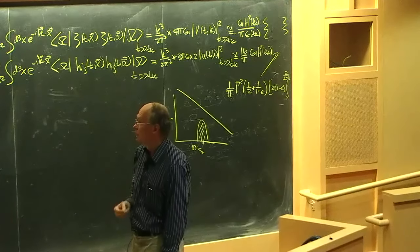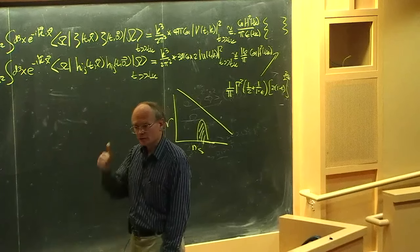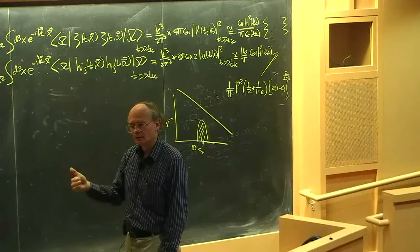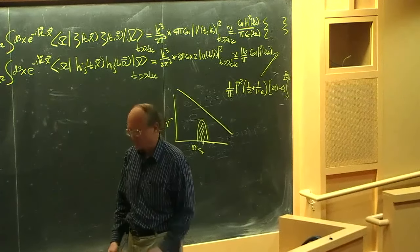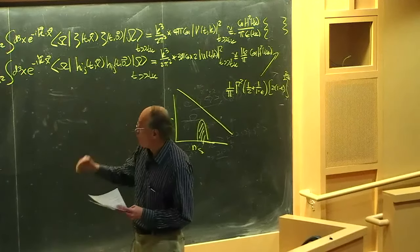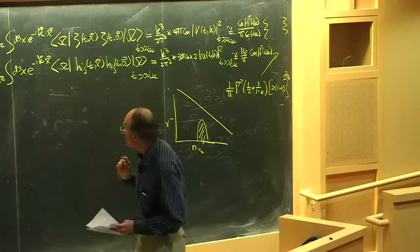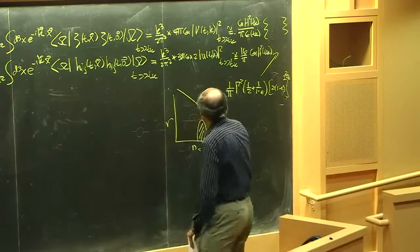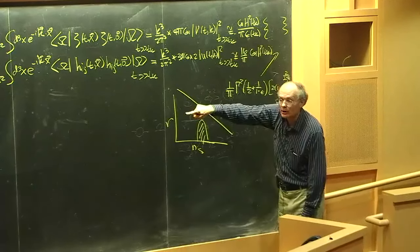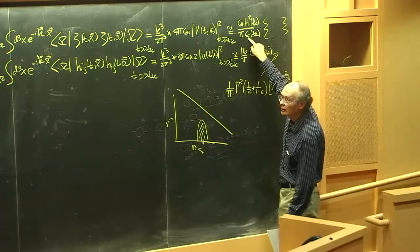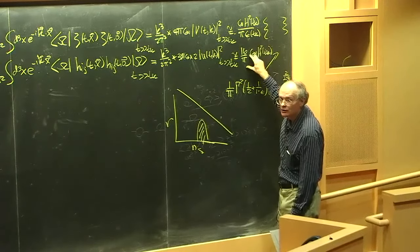K-essence is one example of a more general single-scalar model. Those models do have one scalar, so let me call this a scalar potential model instead. In any case, this epsilon suppression — the factor of 1 over Epsilon in every Zeta propagator — is crucially important because it's the reason we can see the scalar spectrum but haven't yet seen the tensor spectrum.